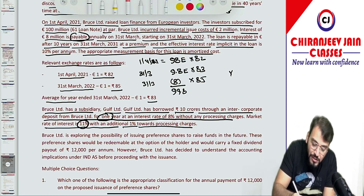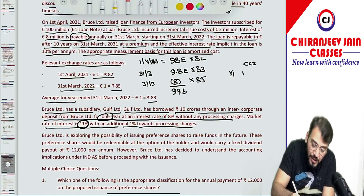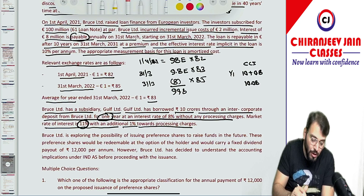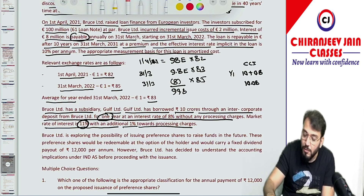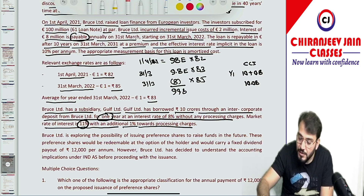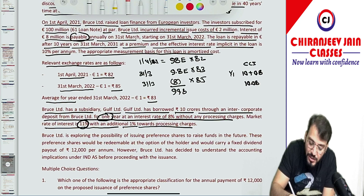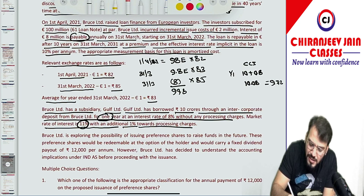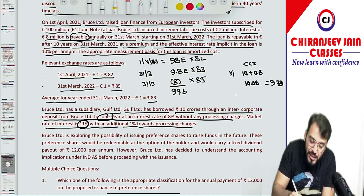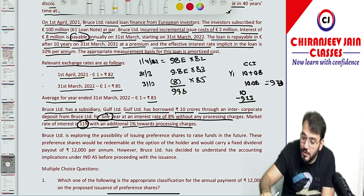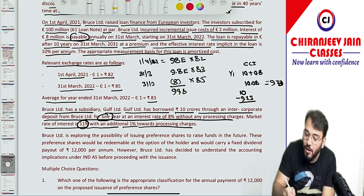So what will be the fair value of the loan? The contractual cash inflow at year-end 1 will be 10 crore principal plus 8% interest, which is 0.8 crore, so total inflow is 10.8 crore. Now multiply by the present value factor: 10.8 divided by 1.11 equals approximately 9.7273 crore, so 9.73 crore. This means loan proceeds are 10 crore, and 10 minus 9.73 equals 0.27 crore difference.